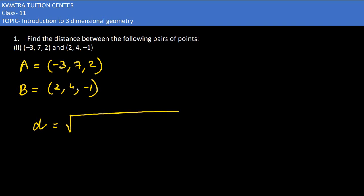So as discussed in the first part, what we have to use is x2 minus x1 ka square, y2 minus y1 ka square, z2 minus z1 ka square.